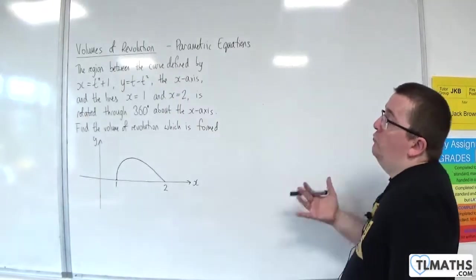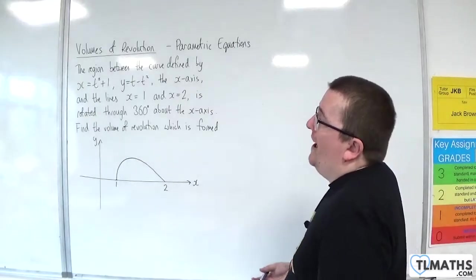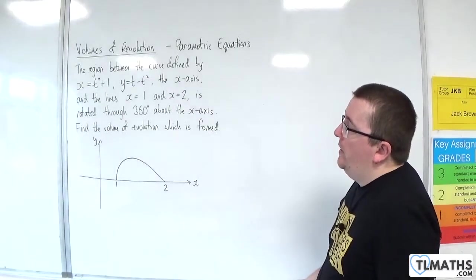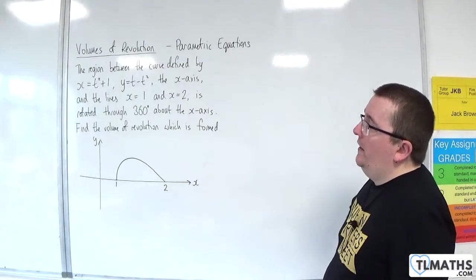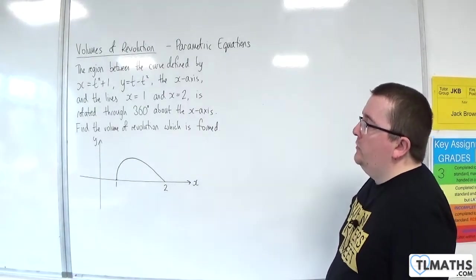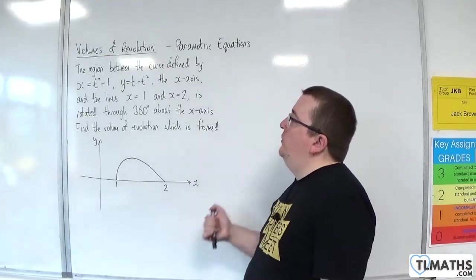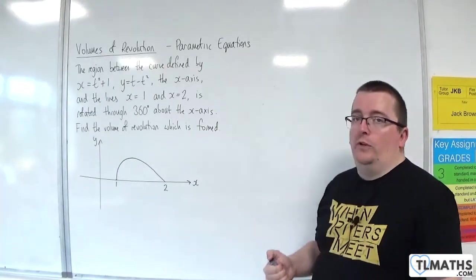In this example, we've got the region between the curve defined by x equals t squared plus 1, y equals t take away t squared, the x-axis, and the lines x equals 1 and x equals 2, is rotated through 360 degrees about the x-axis. Find the volume of revolution which is formed.